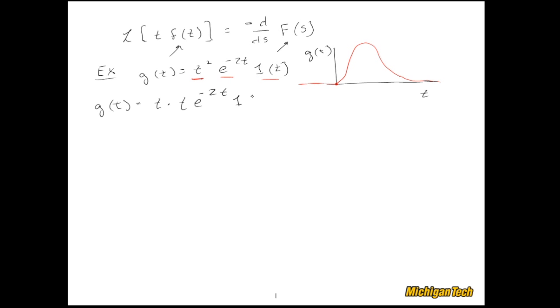So let's go ahead and apply the property twice. I'll say this is capital G(s) and it would be negative d/ds of negative d/ds Laplace transform of e to the negative 2t times the unit step. Boom. Now we have two negative signs so I could just cancel those out so don't have to drag that around the whole time.